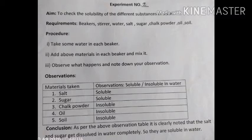The substances which are soluble in water are salt and sugar, while chalk powder, oil, and soil are insoluble in water. We can conclude that as per the above observation table, it is clearly noted that salt and sugar get dissolved in water completely, so they are soluble, while the remaining substances are insoluble in water.